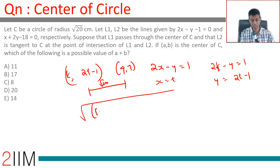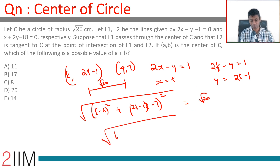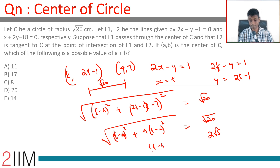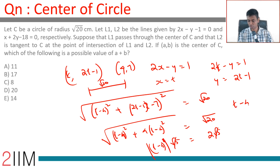So we write: √[(t-4)² + (2t-1-7)²] = √20. This simplifies to √[(t-4)² + (2t-8)²] = √20, which is √[(t-4)² · 5] = √20, so (t-4)·√5 = 2√5. Taking the modulus, |t-4|·√5 = √5·2, so |t-4| = 2, meaning t-4 equals 2 or -2.